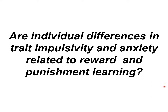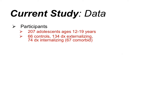One of the questions driving this research is whether individual differences in trait impulsivity and anxiety are actually related to reward and punishment learning. We examined this in a group of 207 adolescents ages 12 through 19: 66 controls, 134 diagnosed with externalizing disorders, 74 with internalizing disorders, and 67 were comorbid.